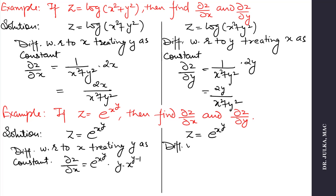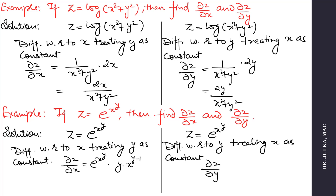Now when we differentiate with respect to y, treating x as constant, the answer is ∂z/∂y equals e^(x^y) as it is, multiplied by the derivative of x^y with respect to y, which is x^y · log x, because x is constant here.